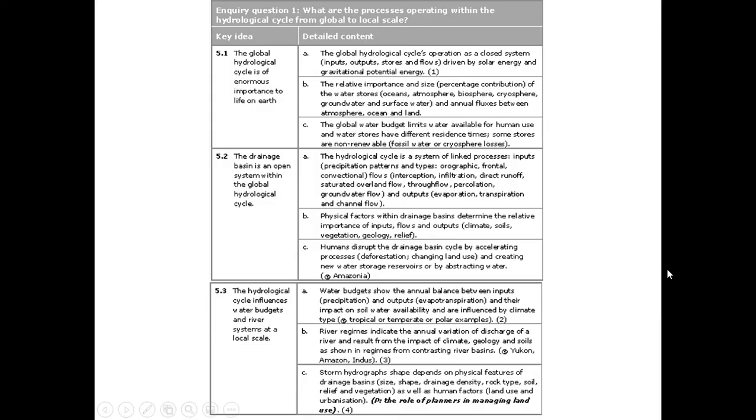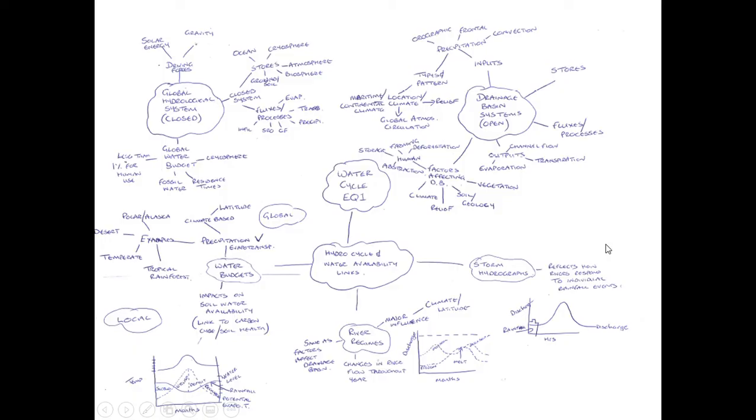If we start off with the mind map here, we can see how everything is linked together. We've got the global system, the drainage basin systems over here, and then we've got how the cycle links to water availability, looking at budgets, river regimes, and storm hydrographs. So let's take them bit by bit to start off with.